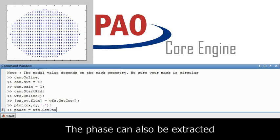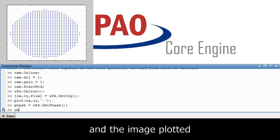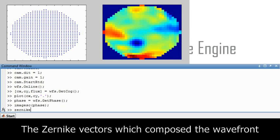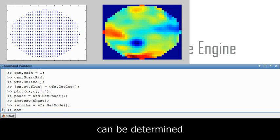The phase can also be extracted and then can be plotted to an image. We can also extract the Zernike vectors which the wavefront is composed of.